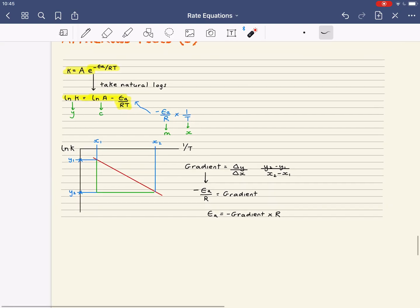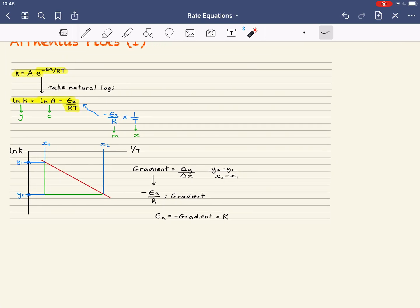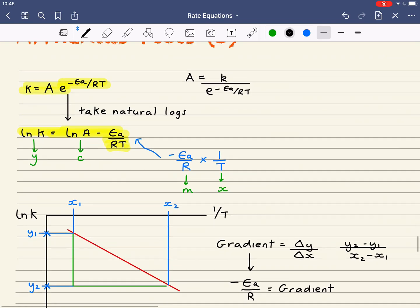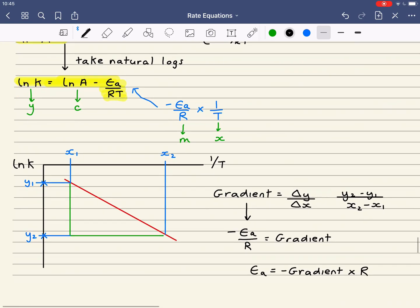Now, when we want to work out the Arrhenius constant, what we'd usually use then is we would get my value for the activation energy and then substitute this in to the exponential form. So if I wanted to work out the Arrhenius constant A, it would be simply k divided by this exponential form here. And that's something we'll have a look at in Arrhenius plots 2 video.